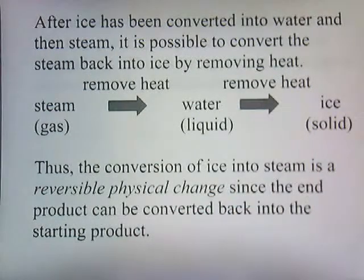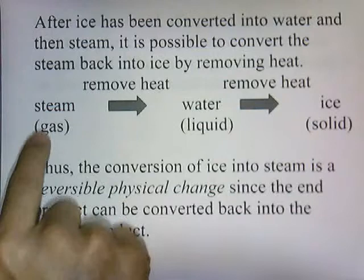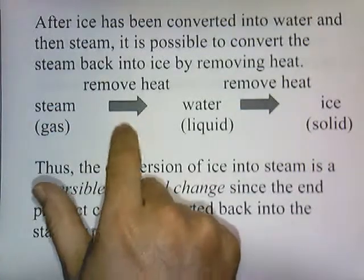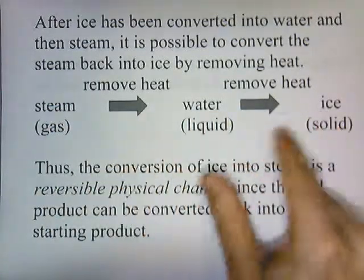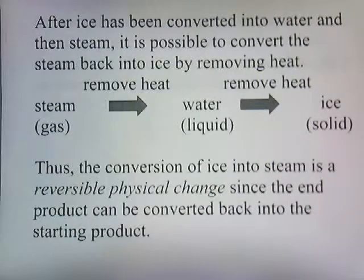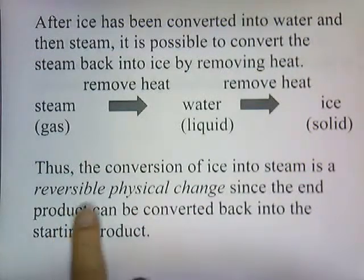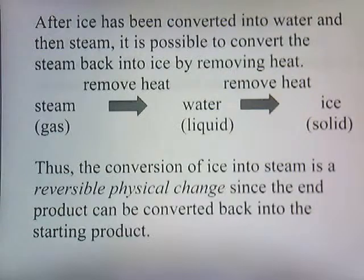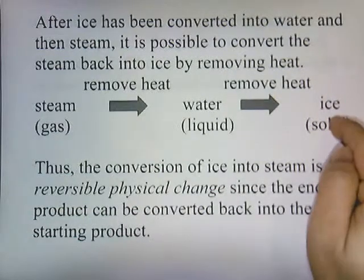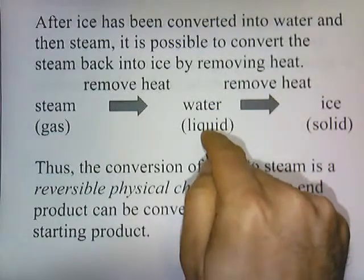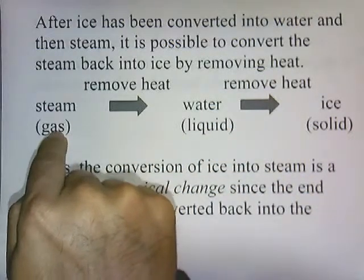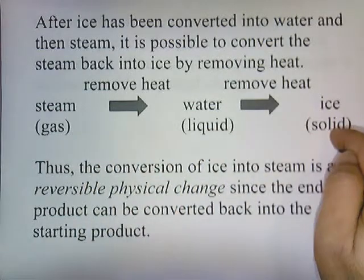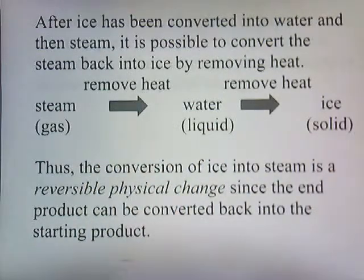After the ice has been converted into water and then steam, it's possible to convert the steam back into ice by removing the heat. So if I remove the heat, it turns into water, and if I cool it further, the water turns back into ice. The conversion of ice into steam is a reversible physical change since the end product can be converted back into the starting product.